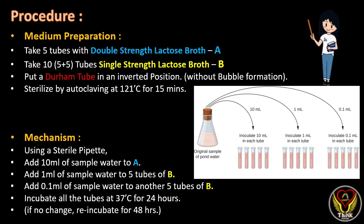Now let's see how to do the presumptive test. The lactose broth should be prepared in two different strengths — single and double strength. There should be three sets of test tubes, each having five tubes. For the first set, double strength lactose broth is added; for the second and third sets, single strength lactose broth is added. The Durham tube should be added in an inverted position. Importantly, the Durham tube should be added without any bubble formation, because if it has bubbles before sterilization it can indicate false positive results. The media is sterilized by autoclaving at 121°C for 15 minutes.